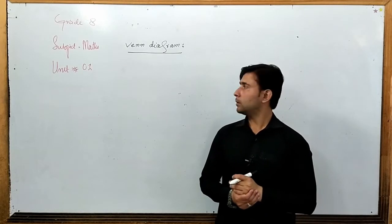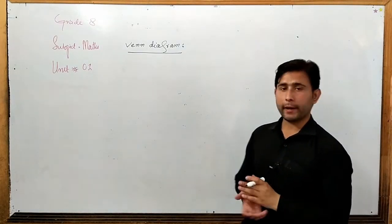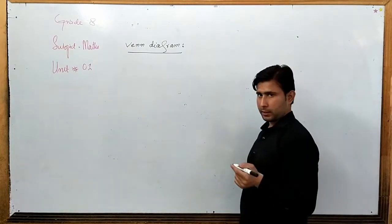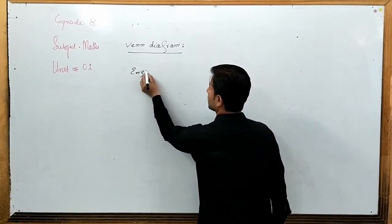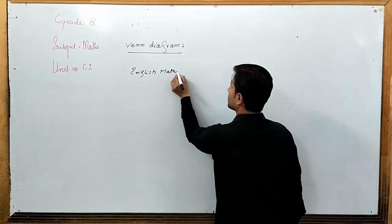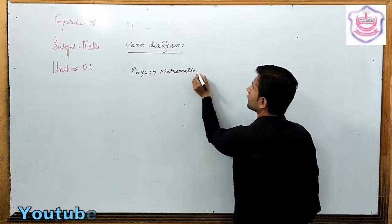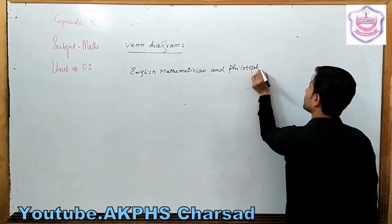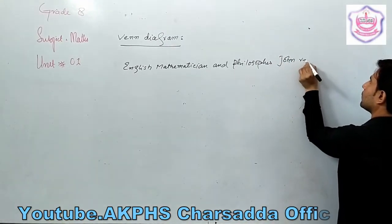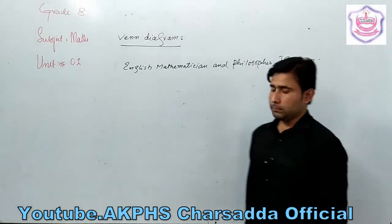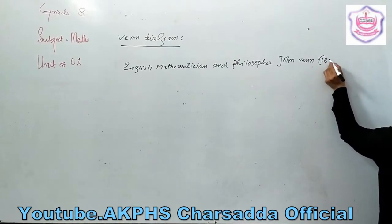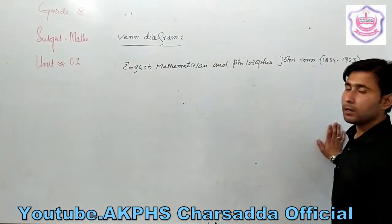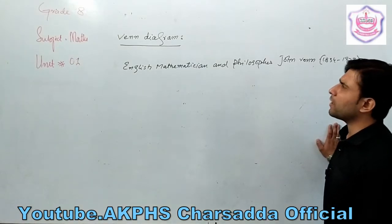Bismillahirrahmanirrahim. Assalamu Alaikum students. Today we will discuss Venn diagrams. The Venn diagram was first represented by English mathematician and philosopher John Venn, 1834 to 1923.